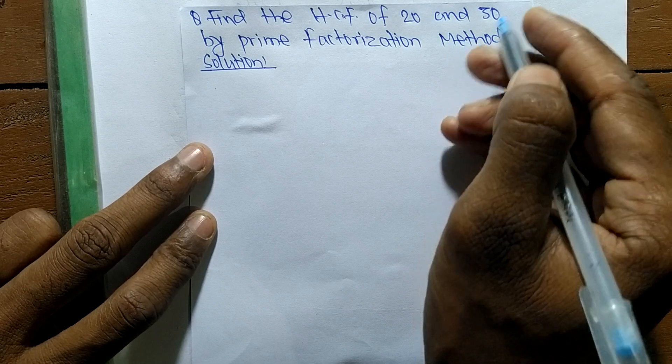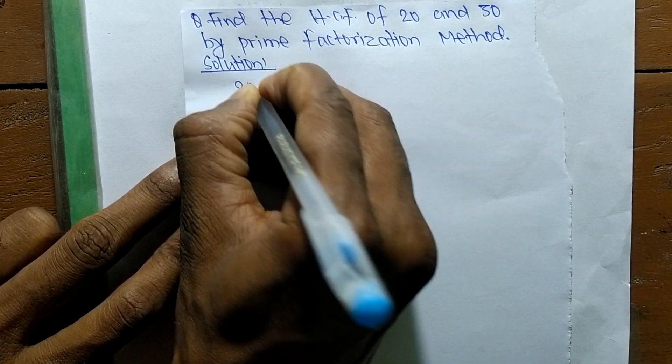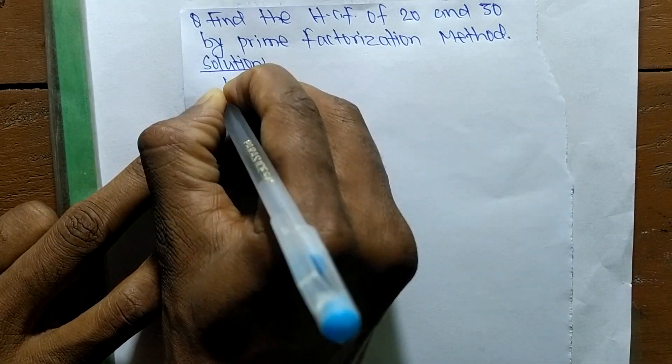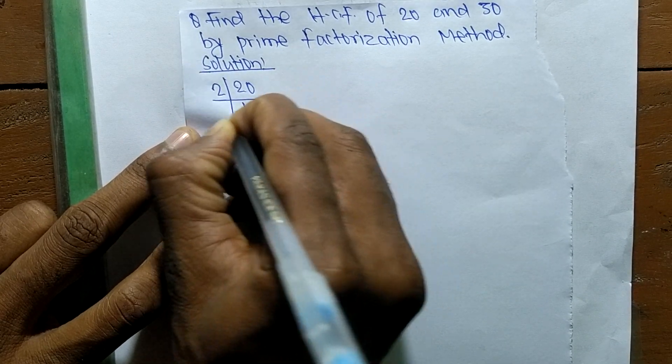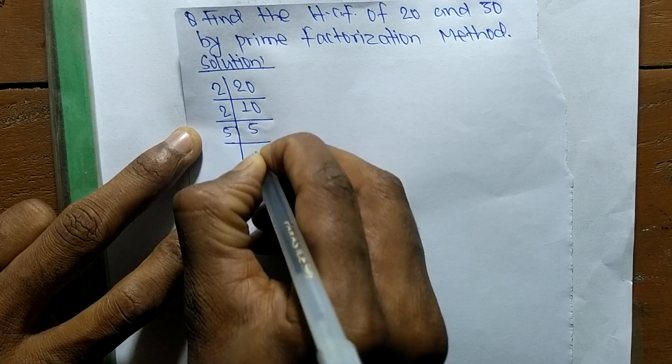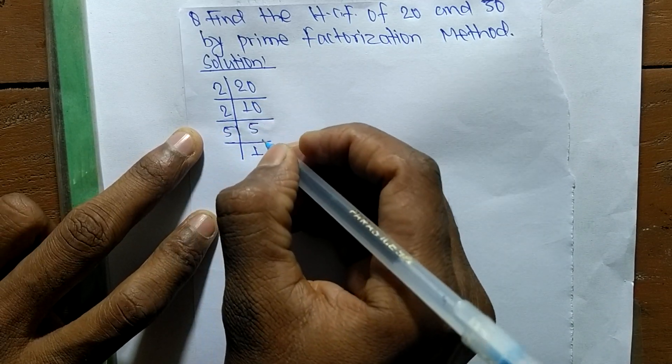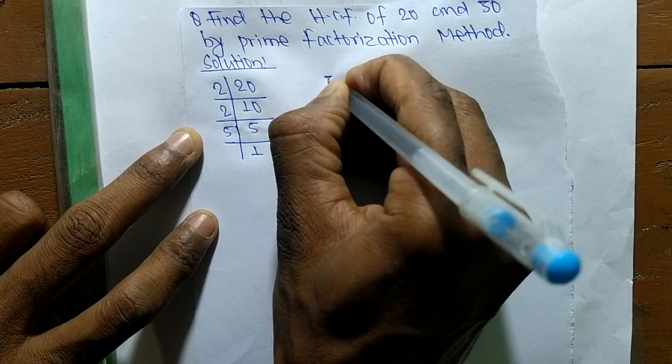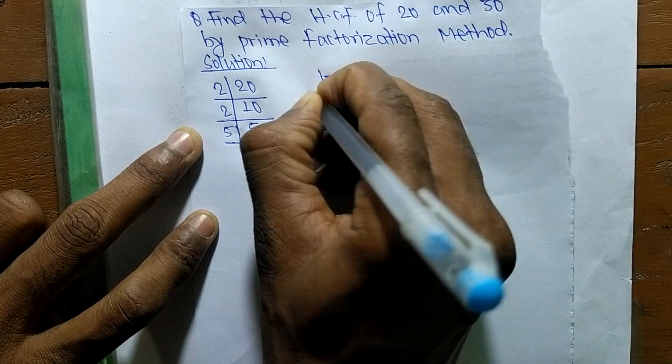First, we find out the prime factors of 20. So it is 2 times 10 equals 20, 2 times 5 equals 10, and 5 times 1 equals 5. Like this, the prime factors of 30 are: